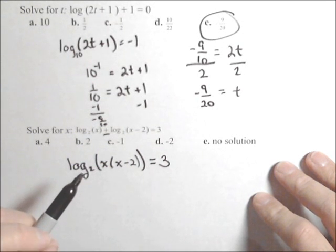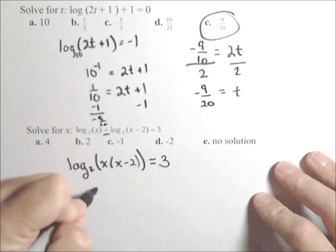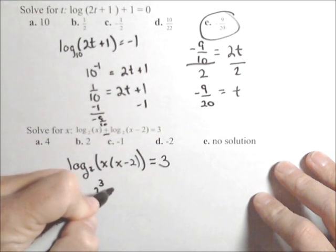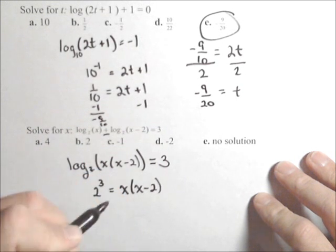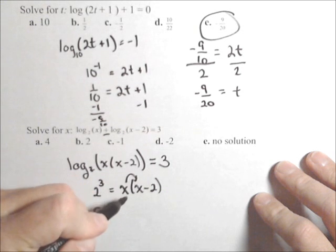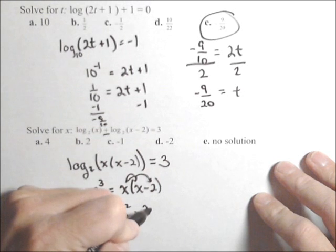Now let's rewrite this as an exponential. The base is two. So two to the third equals x times x minus two. Two cubed is eight. And if I distribute this x, I have x squared minus two x.